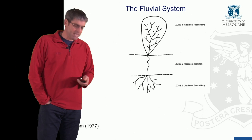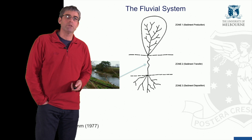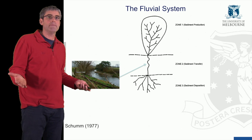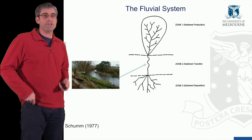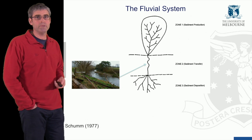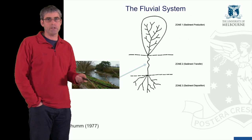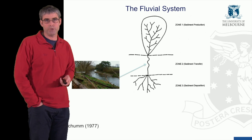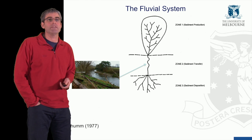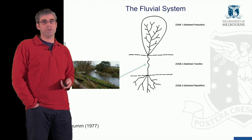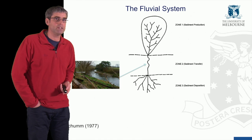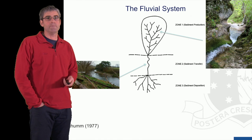We can place the river reach from the previous slide within the fluvial system. You should recognise this reach — it's the Old Thompson River from your project assignment from the first module and this module. That reach sits within Zone 2, the sediment transfer zone. It's typically a gravel-bed river with mobile sediments.